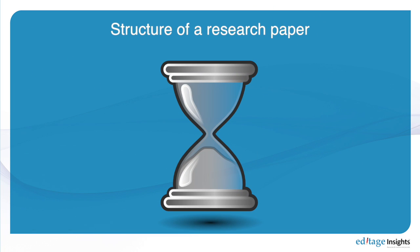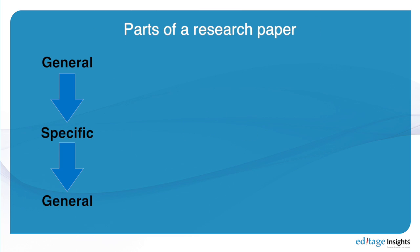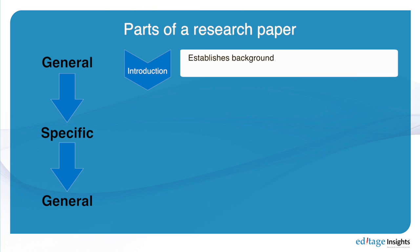Research writing goes through a general, specific, general format. In the introduction of your paper, you start off with a general statement, you compile references, and you talk about the general research field.